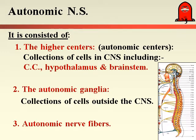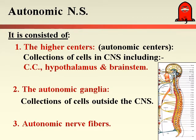Ganglia means a collection of nerve cells outside the central nervous system — for example, in the abdomen, on the heart, on the stomach. These are called Autonomic Ganglia. We also have Autonomic Nerve Fibers distributed all over the body, all over the internal organs, and even in the skin and on glands like sweat glands. They are responsible for regulation of the effector organ.